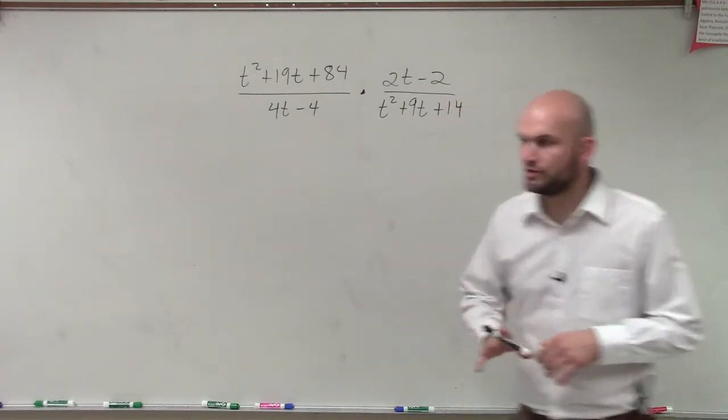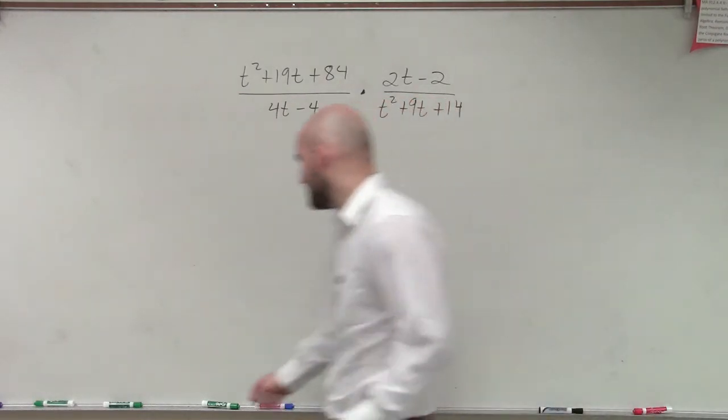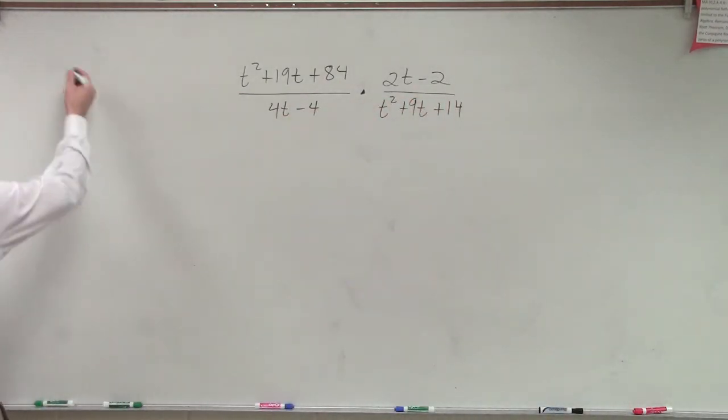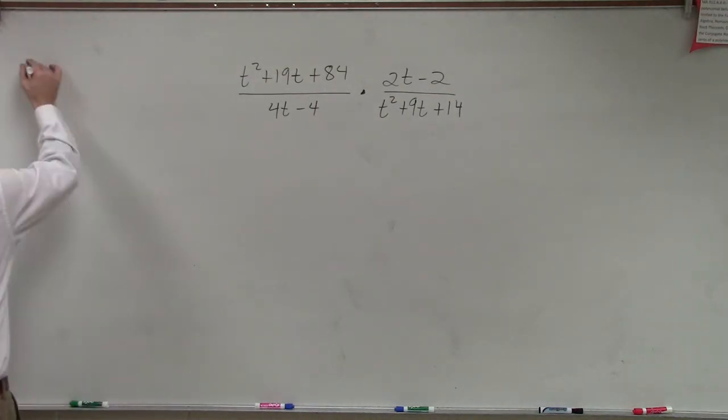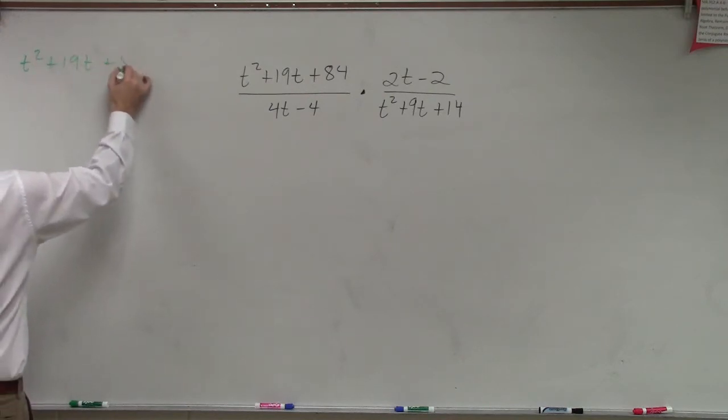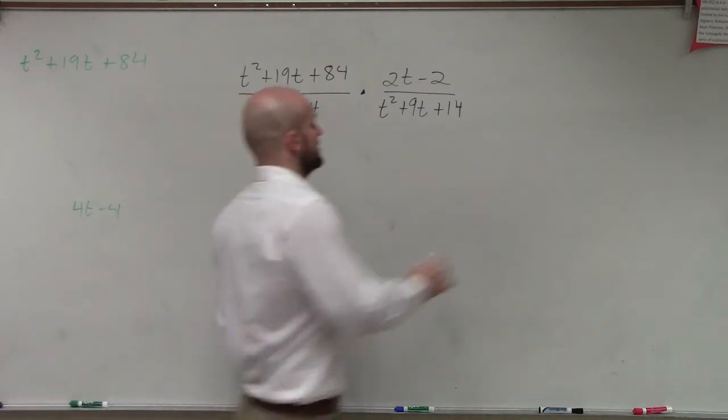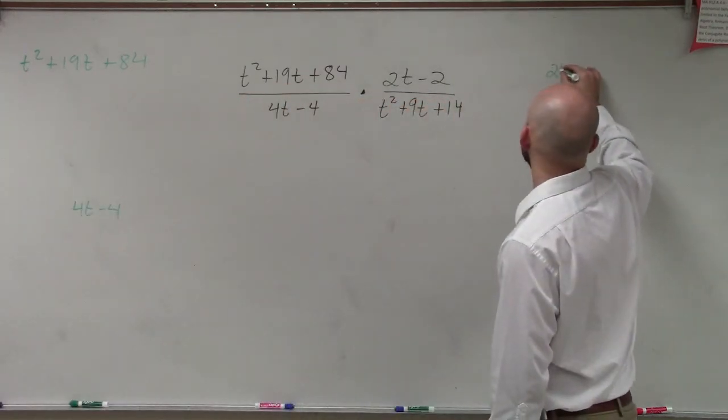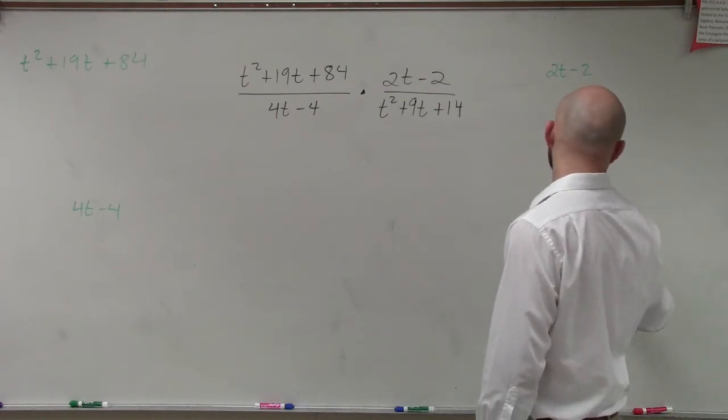The first thing that I'm going to do when I have a problem like this is I have all four different numerators and denominators. I'm going to write them up in separate sections on my sheet of paper. So let's write t squared plus 19t plus 84, I have 4t minus 4. Over here, I have 2t minus 2. And over here, I have t squared plus 9t plus 14. All right?